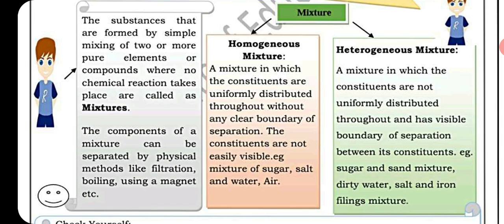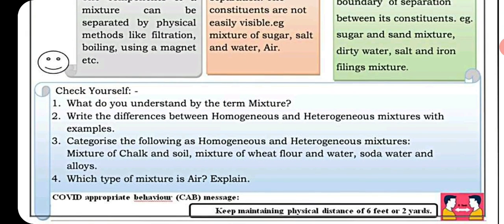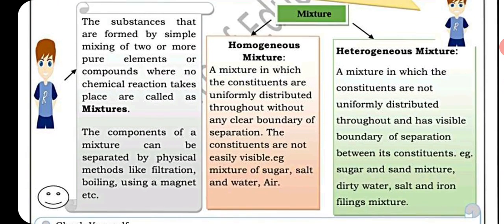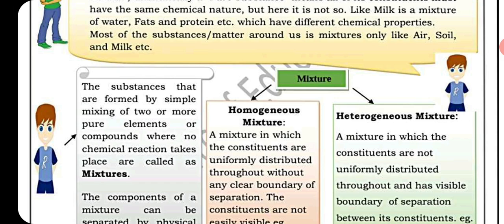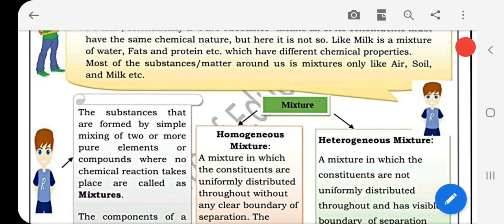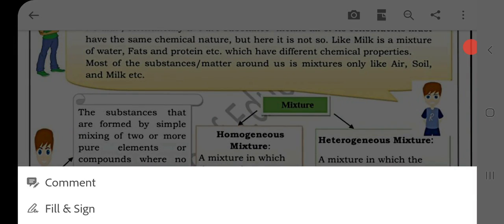In a heterogeneous mixture, the components are visible. For example, if you mix sugar and soil, you can see both the soil and the sugar separately. Similarly, if you add soil to water, you can see both the soil and the water distinctly.